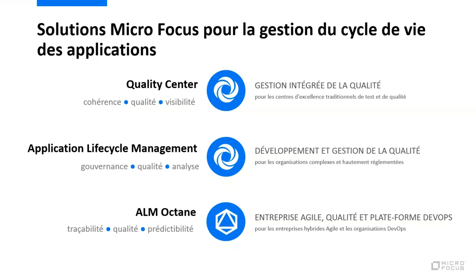Des processus de gouvernance et d'analyse peuvent être mis en place, et d'autres populations se retrouvent dans ALM, puisqu'aujourd'hui ALM peut être utilisé par les équipes de développement pour, par exemple, traiter les anomalies, en plus des équipes traditionnelles de qualité qui gèrent tout ce qui concerne les tests sur les applications.